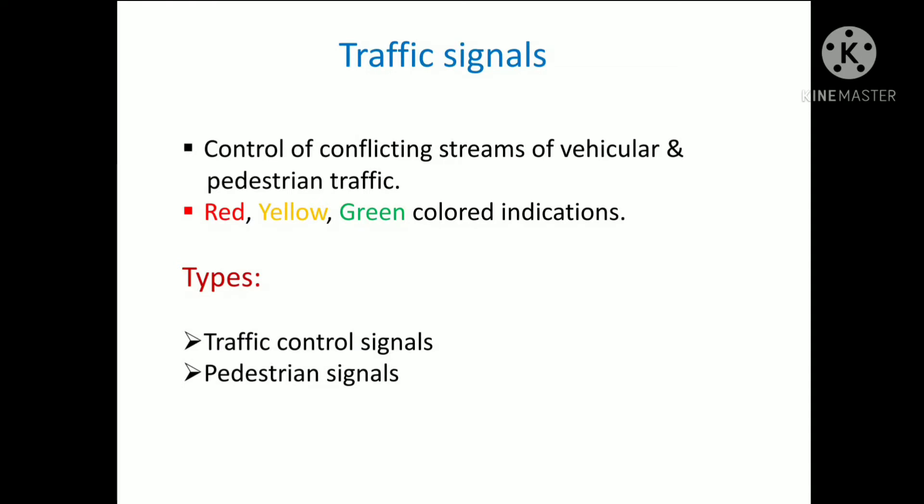Traffic signals are control devices which alternately direct traffic to stop and proceed at intersections using red and green traffic light signals automatically. Next, types: the signals are classified into traffic control signals and pedestrian control signals.